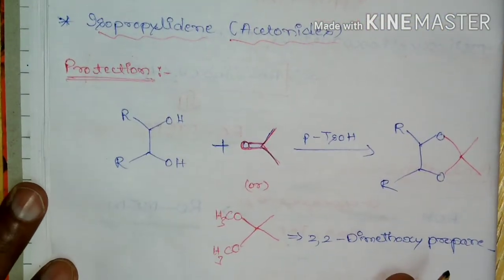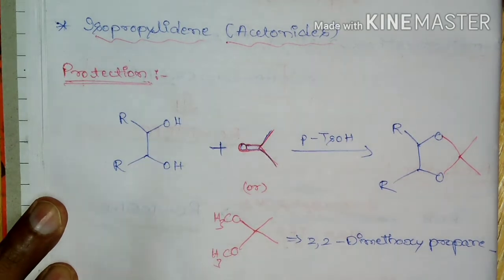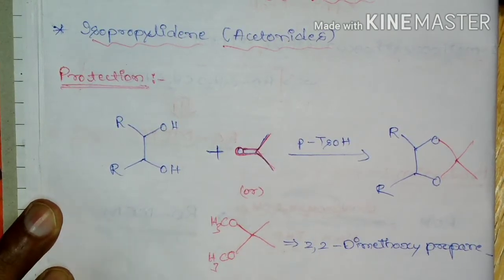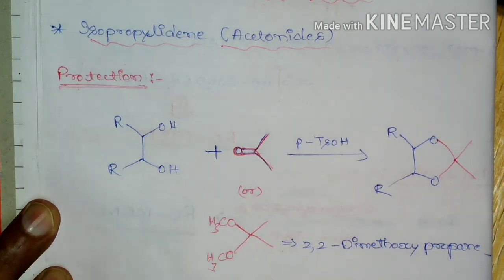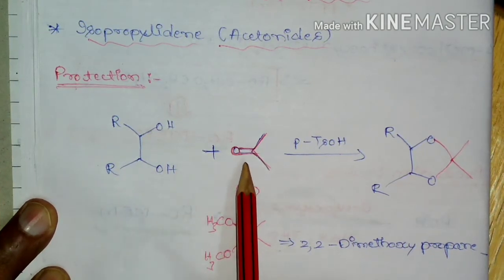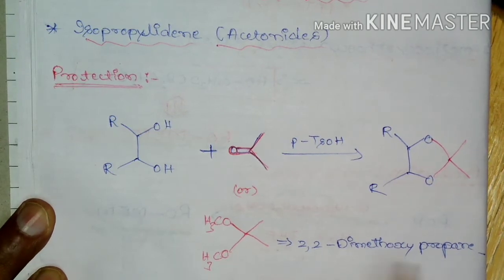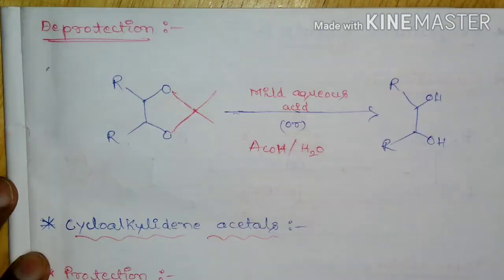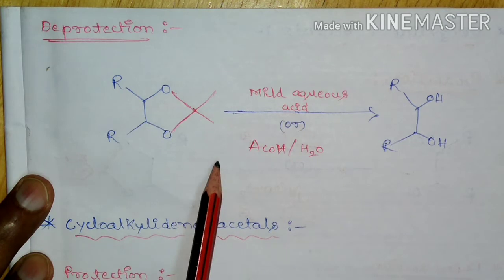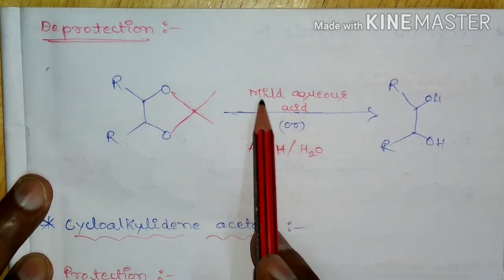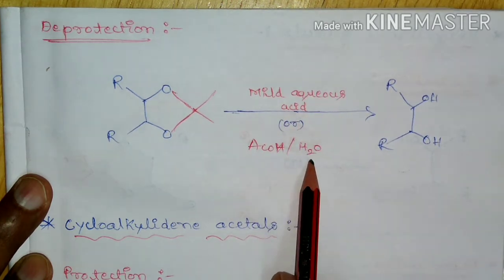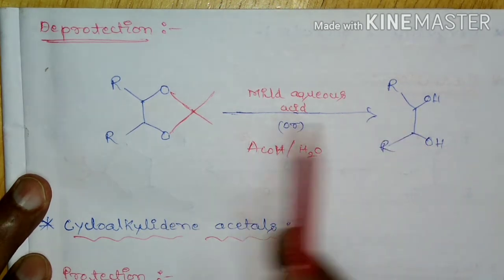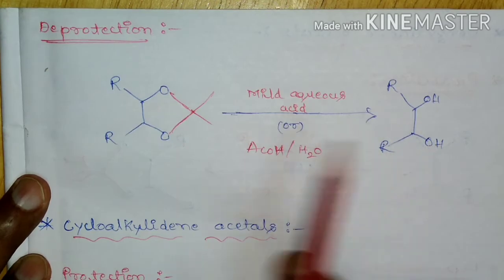Looking at the protection reaction: 1,2-diol treated with acetone or 2,2-dimethoxypropane in the presence of p-toluenesulfonic acid leads to the formation of isopropylidene acetonides. For deprotection, isopropylidene acetonides can be deprotected using either mild aqueous acid or acetic acid in water. Mild aqueous acid means mineral acids like HCl, H2SO4, or p-toluenesulfonic acid.